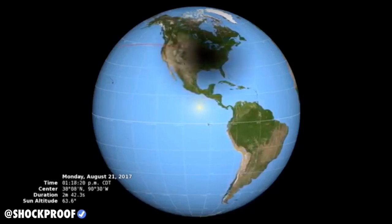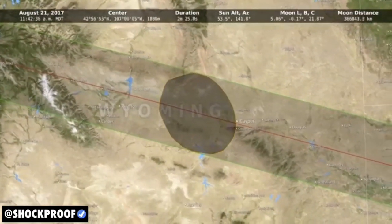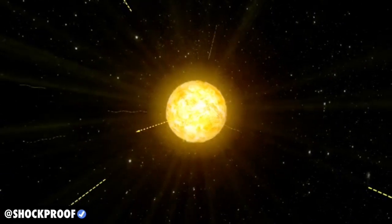A team of scientists will combine data from EPIC with measurements taken on the ground to learn more about how the sun's energy is absorbed and reflected in Earth's atmosphere.